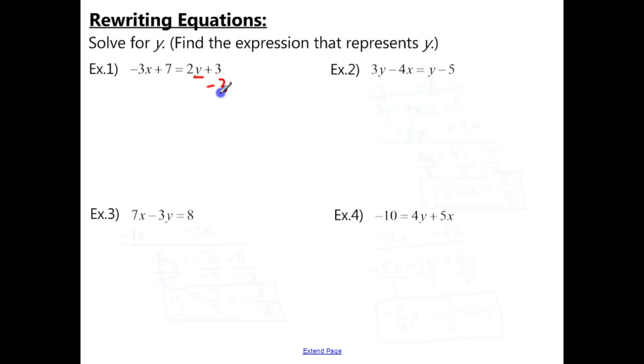So first we want to subtract 3 from both sides, and then we're going to subtract it from the 7 because these are like terms. You can't subtract it from this because this 3 doesn't have an x. So the positive 3, negative 3 cancel out. On the left side we're going to bring that negative 3x down. Positive 7 minus 3 is positive 4, and then we have 2y.